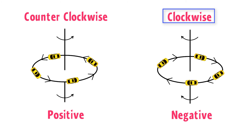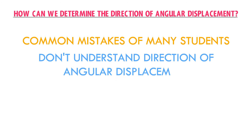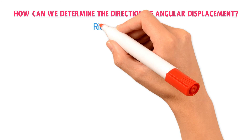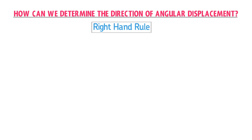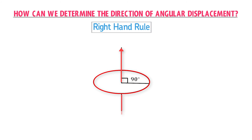Now let me teach you how to determine the direction of angular displacement — a very common source of mistakes for many students. To find the direction of angular displacement, we use the right-hand rule. The direction of angular displacement is always along the axis of rotation. The axis of rotation is a fixed line that passes through the center O of the circle, and it is always perpendicular — at 90 degrees — to the plane in which the circle lies.